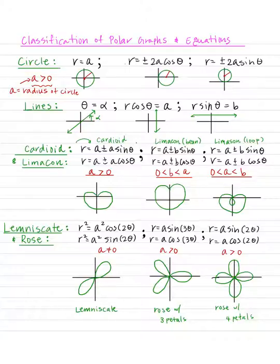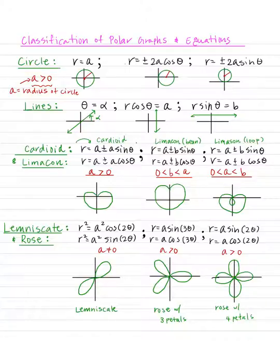For lines, equations are θ equals α, where α is the angle; r cosine θ equals a. That makes sense because r cosine θ equals x, so x equals 5 is a vertical line. Similarly, r sine θ equals y, so y equals b — pretend b is 5 — so y equals 5 is a horizontal line.